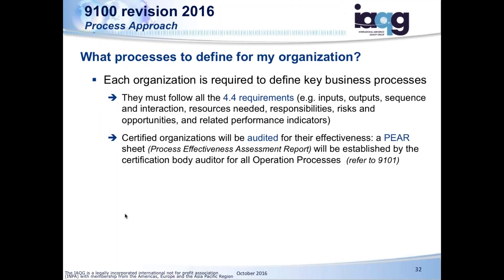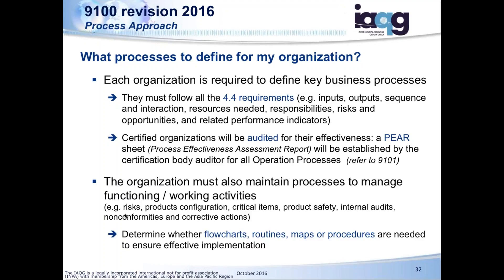Sometimes people get confused about top-level processes versus activities. When the standard says you need to have a process for configuration management, that does not necessarily mean configuration management has to be one of your top-level processes. When you do have top-level processes, the requirements of Clause 4.4 apply — those would also be the processes that are part of your PEARs, your Process Effectiveness Assessment Reports. All processes and activities, however, need to be controlled, and we need to ensure that they're effective.